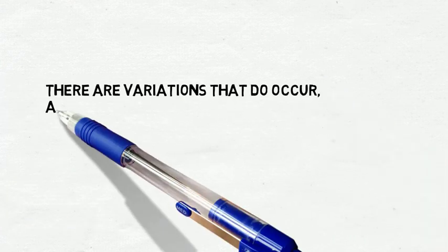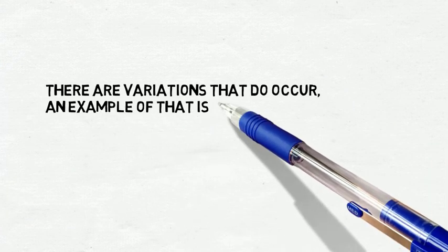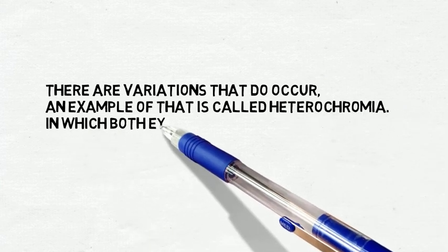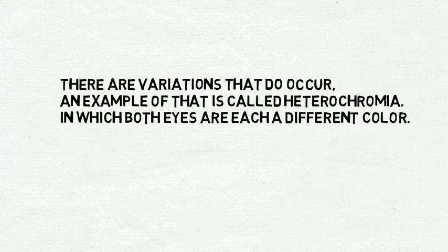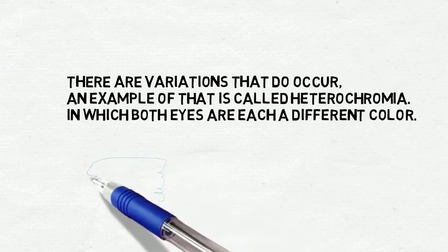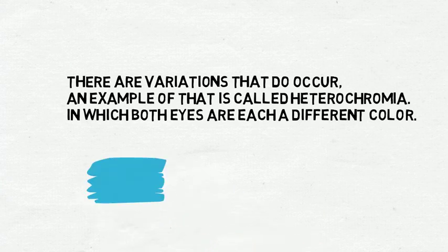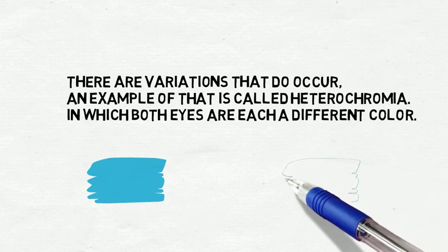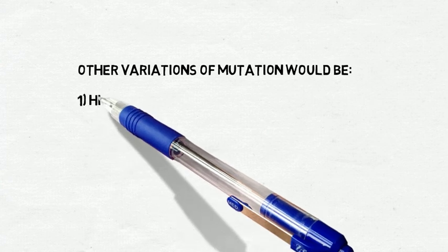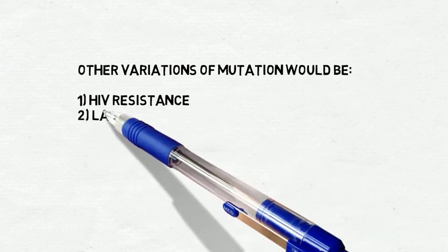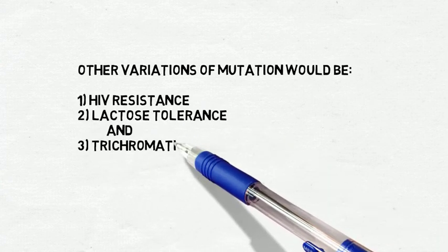There are variations that do occur. An example of that is heterochromia, in which both eyes are each a different color — one could be blue while the other could be green. Other variations of mutation include HIV resistance, lactose tolerance, and trichromatic vision.